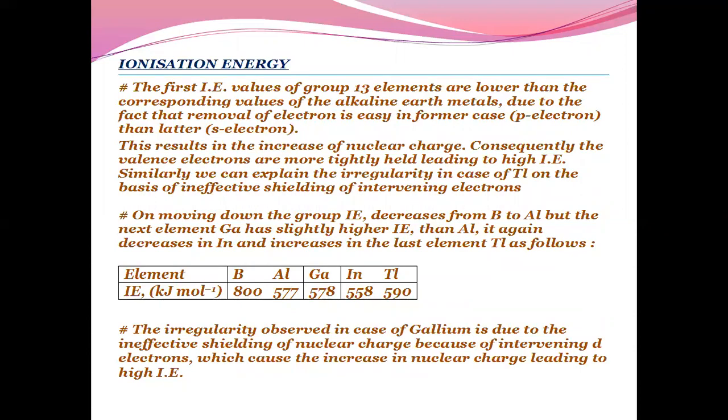The removal of P electrons is easy compared to S. This results in increase of nuclear charge. Consequently, the valence electrons are more tightly held, leading to high ionization energy. This first ionization energy is to remove only the P electron, which is very easy.